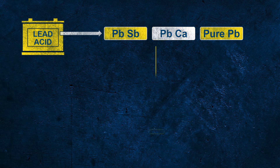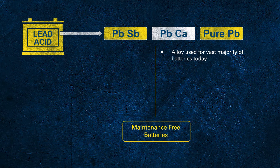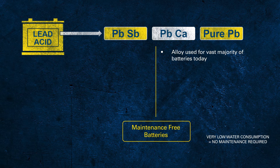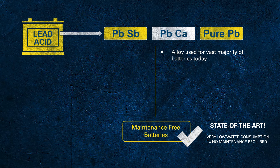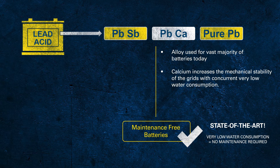Today, for all so-called maintenance-free batteries, lead calcium alloy is used for both the positive and negative grid. These batteries have very low water consumption, so under usual circumstances no maintenance is required, which is a huge benefit for the end customer. Calcium is used to strengthen the grid and increase mechanical stability, as pure lead is very soft, which could affect mechanical robustness while in use — an important factor for long battery life.